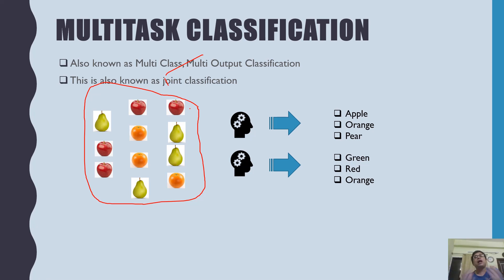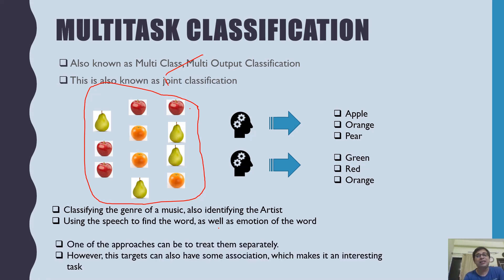Let's look at some other examples. You want to classify the genre of music as well as you want to identify the artist, so music is the common data element and you have two tasks. You are using speech to find the word as well as the emotion of the spoken word. These types of things you call multitask classification.